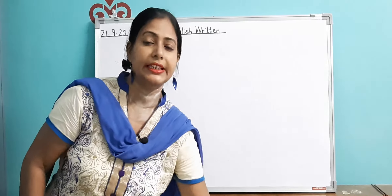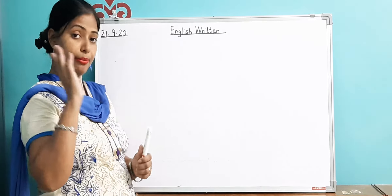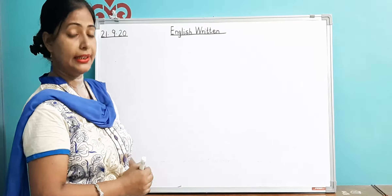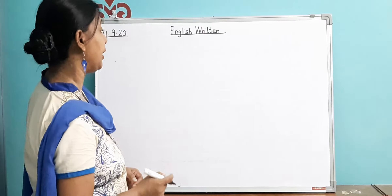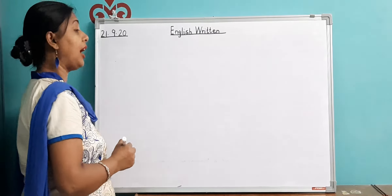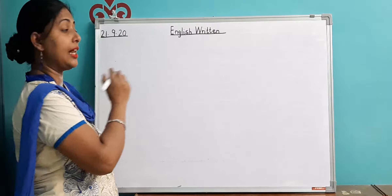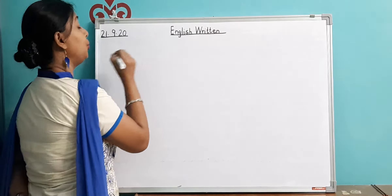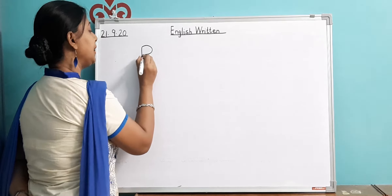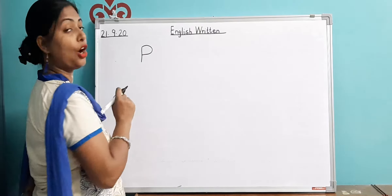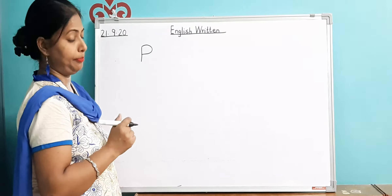I hope you all recognize the pictures. If I show a picture, you will be able to tell the alphabet. Today if I ask you to write — come on children, write alphabet P — you should be able to write it quickly within the line. This is how you write P.